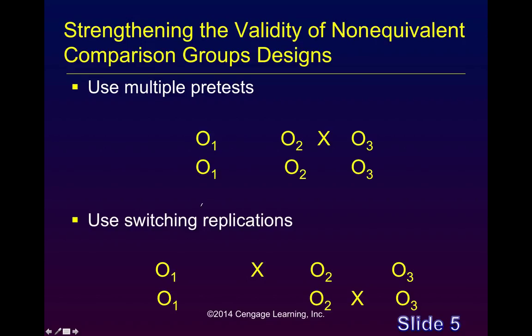As we can see from this slide, we have a number of options or variations in the comparison group design that we can use to make our research a little more robust. In the top example, we use multiple pretests. This gives us an idea of any change from the first pretest to the second pretest, and we can compare the two groups. Then we give our intervention to the treatment group and continue with business as usual for the comparison group, and compare the post-test results.